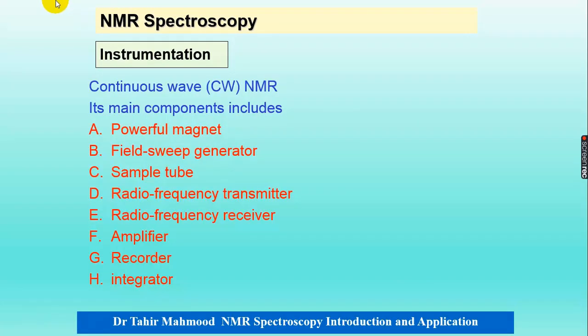These are the components of continuous wave NMR. First is a powerful magnet. Second, a field sweep generator. Then, a sample tube. A radio frequency transmitter and receiver. An amplifier. A recorder. And then, an integrator.